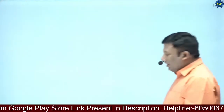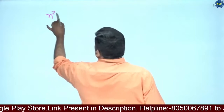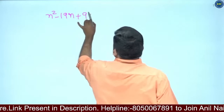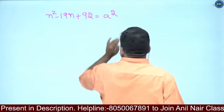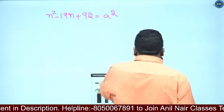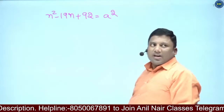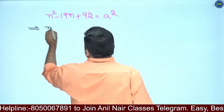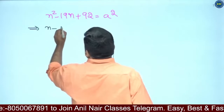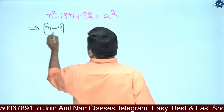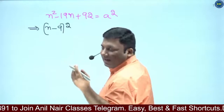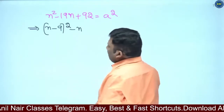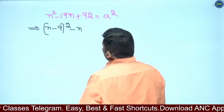Now let me show you another approach. The question is: N squared minus 19N plus 92 is a perfect square. So this will become N minus 9 whole squared. Can I write it like this? N squared minus 18N, then minus N, plus 81.